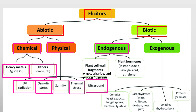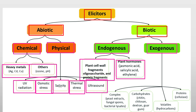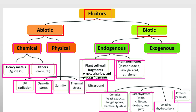Biotic elicitors are endogenous or exogenous. Endogenous biotic elicitors include cell wall fragments like oligosaccharides, protein fragments, and plant hormones such as jasmonic acid, salicylic acid, and ethylene. Exogenous biotic elicitors include complex yeast extracts, fungal spores, bacterial lysates, carbohydrates like chitin, chitosan, dextran, glucan, volatile oils like hydrocarbons, and proteins like cellulase. Elicitors produce protection for plants by means of elicitation.